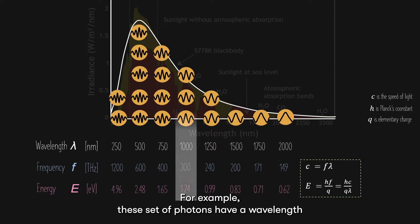For example, these sets of photons have a wavelength of 1000 nm, equivalent to a frequency of 300 terahertz, and energy of 1.24 electron volts.